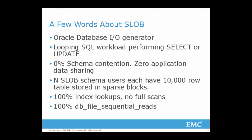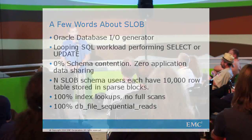SLOB is exceedingly simple — it's supposed to be that way. It's nothing more than a work loop performing either SELECT or UPDATE SQL. There's 0% schema contention — it cannot happen. There's no application data sharing because each SLOB user has 10,000 rows in a table and the blocks are forced sparse. The idea is to use as little x86 instruction as possible to do as many physical I/Os as we can, so if there's only one row per block, it's fewer cycles following the read.